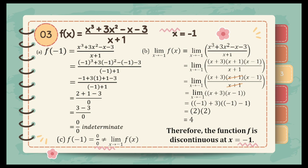Our third item is f of x is equal to x cubed plus 3x squared minus x minus 3 all over x plus 1, and the value of x is equal to negative 1. First, substitute negative 1: we get negative 1 cubed plus 3 times negative 1 squared minus negative 1 minus 3 over negative 1 plus 1. This gives 0 over 0, which is indeterminate. And for the limit of the function, since it is factorable, we can do the factorization to find the limit.